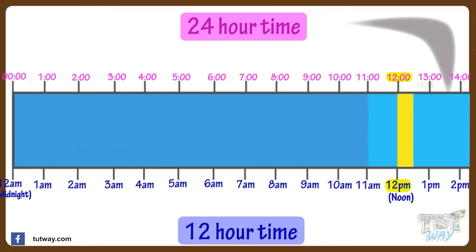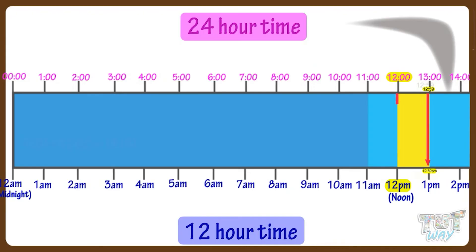For times from 12 to 12:59 in the 24-hour clock system, it is a straight conversion to p.m. time. So 12 noon is 12 p.m., 12:05 is 12:05 p.m., and 12:35 is 12:35 p.m.